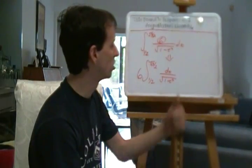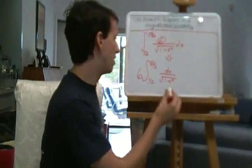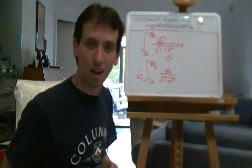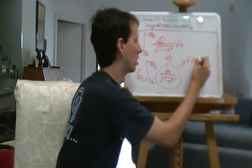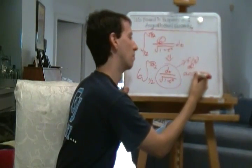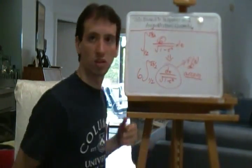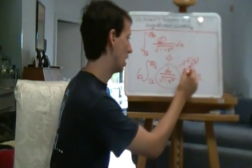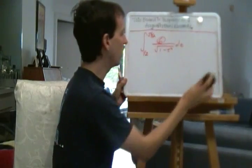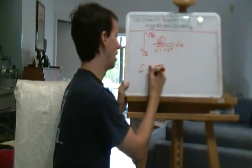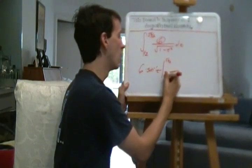This function might look familiar to you. If you remember the antiderivatives, you'd know that 1 over √(1 − t²) is none other than the derivative of arcsine, or sine inverse. So naturally, an antiderivative we'll want to use is arcsine. This integral is 6 times sine inverse of t evaluated between √3/2 and 1/2.